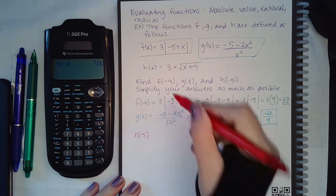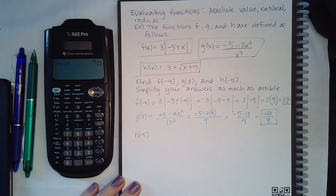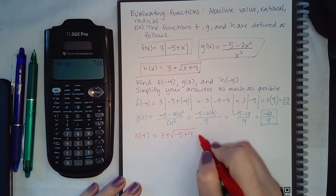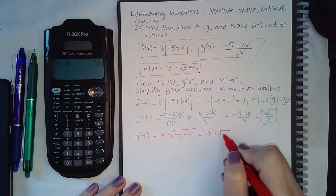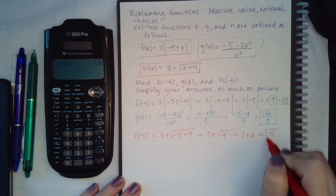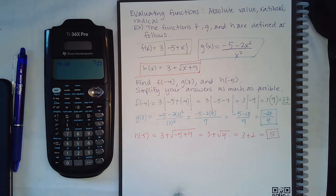Now for H of negative 5 we have to use the function for H. Okay, so we're going to say 3 plus the square root of negative 5 plus 9, that's 3 plus the square root of 4, which is 3 plus 2, which is 5.